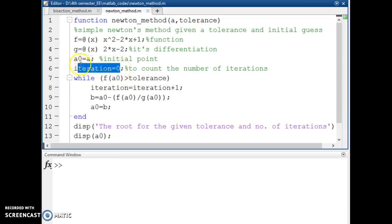I define a variable iteration to count the number of iterations required to reach the tolerance level. In every iteration I increment the value of this variable. Then I use the standard Newton method formula, that is the value of the next iteration is x minus f(x) upon f dash x.